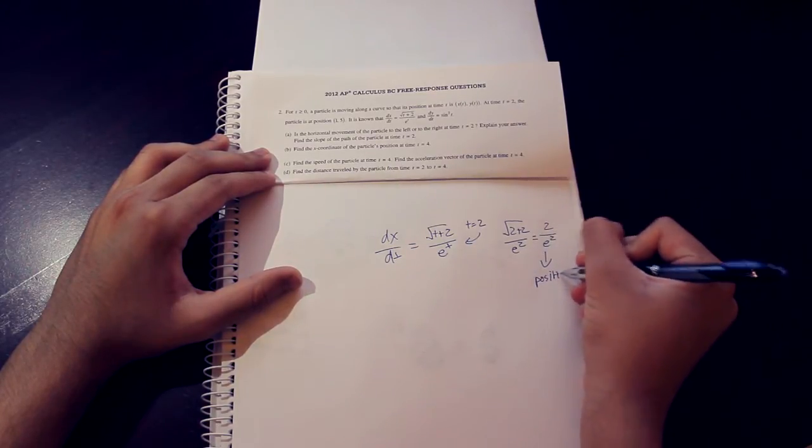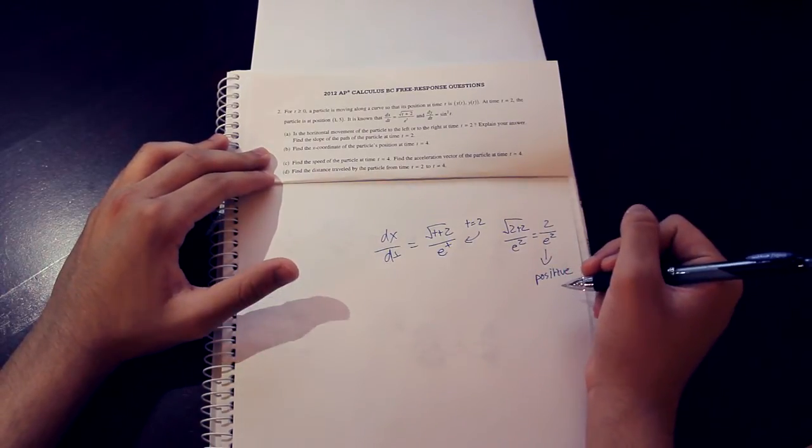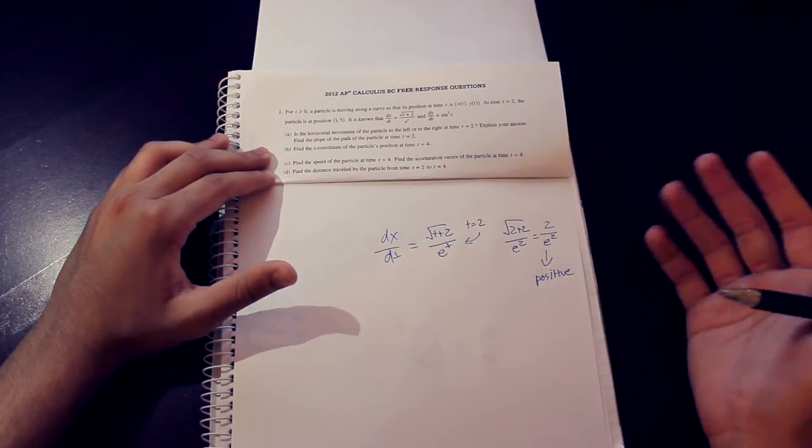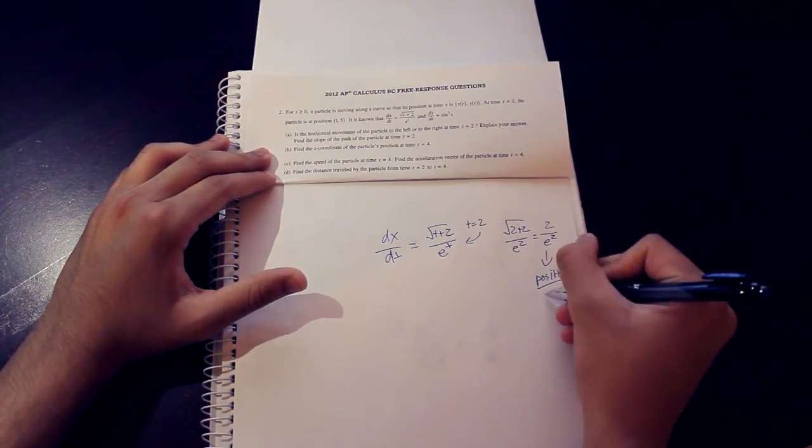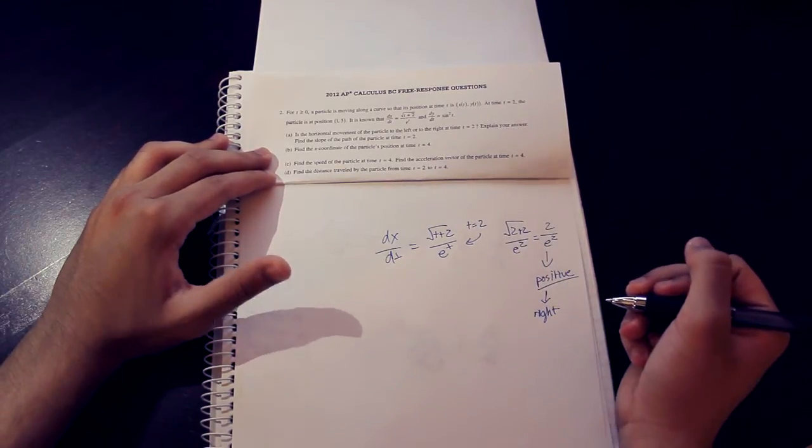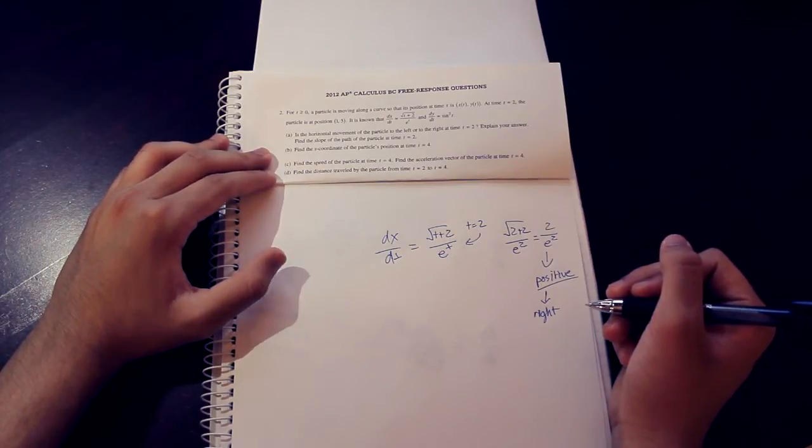This value is positive. This means that it's going to be going in the rightward direction because typically positive values indicate rightwards or for dy dt would indicate upwards. So this means the particle is moving to the right. But we're not done with part A yet.